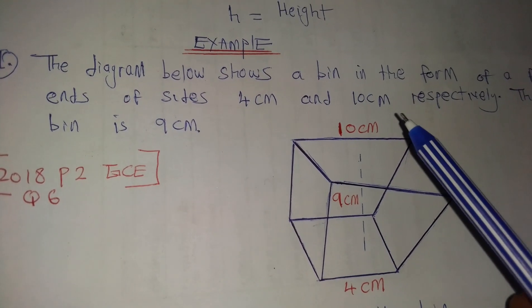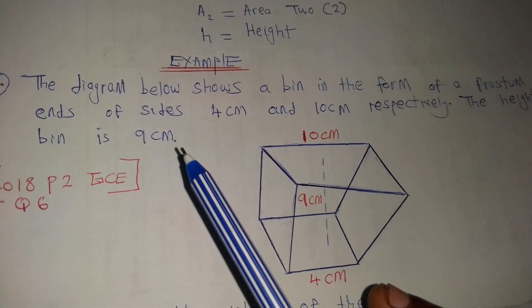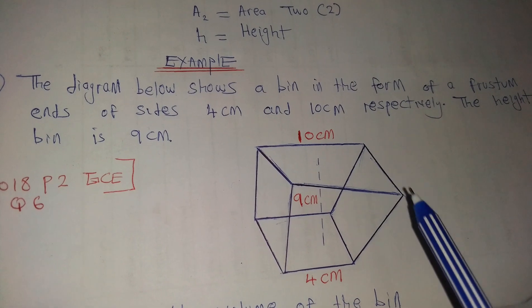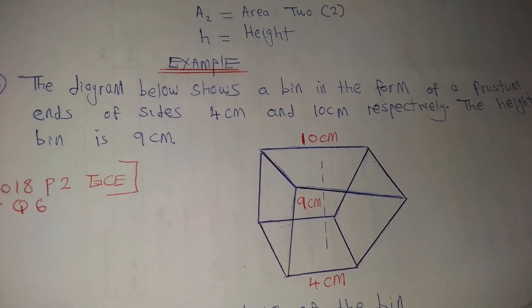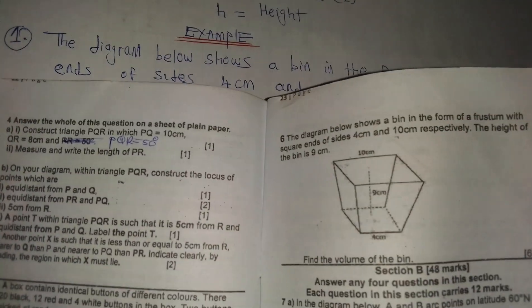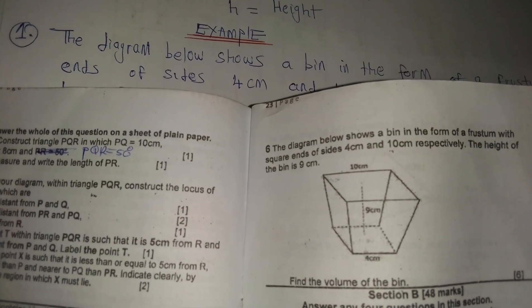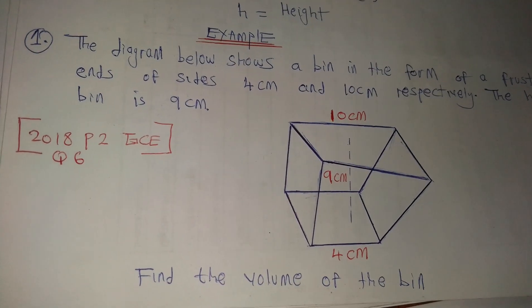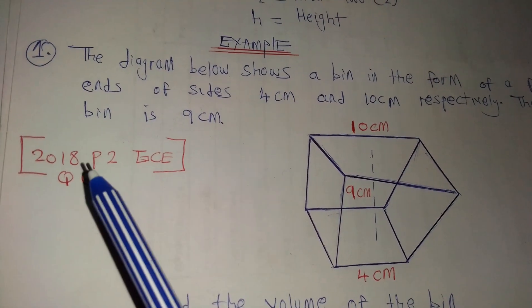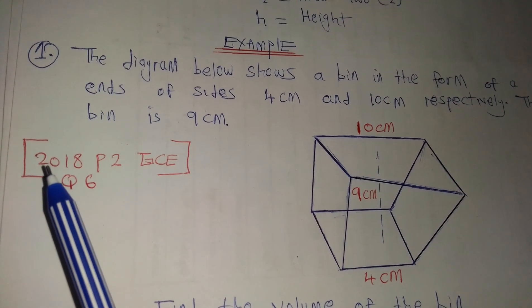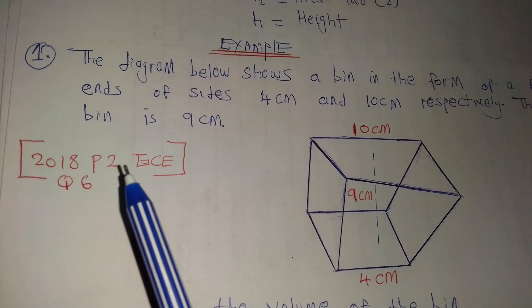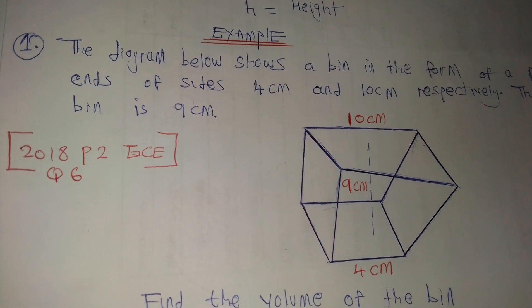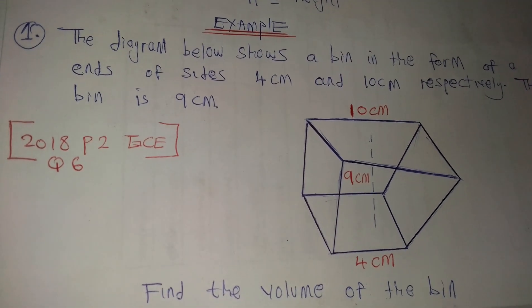The font is very tiny, so I'll draw it on paper so you can see. I've just drawn it here — it may not be as accurate as the diagram, but this is for easy explanation. This question is from 2018, Paper 2, GCE, Question 6, in case you want the reference.